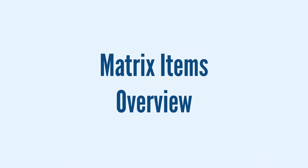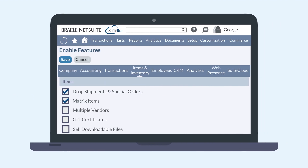To use Matrix Items, you'll need to enable the Matrix Items feature. You can find this feature on the Items section of the Items and Inventory tab of Enable Features.